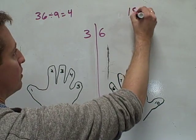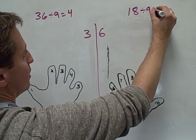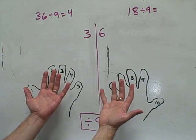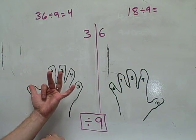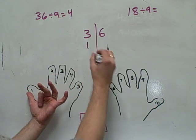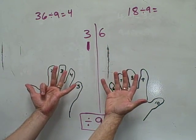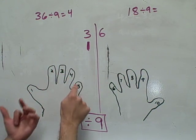Let's try 18 divided by 9. Okay, this time we're going to make 18. So we're going to put this finger down, because you need 1 on this side. And that leaves 1, 2, 3.